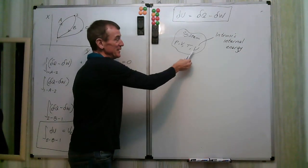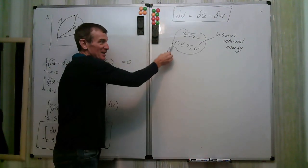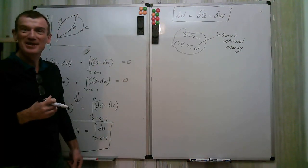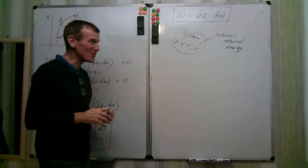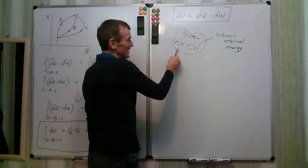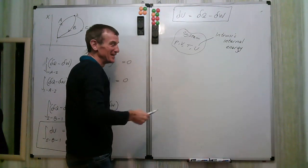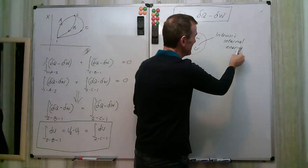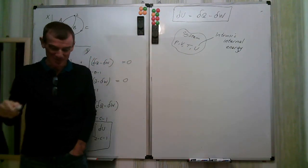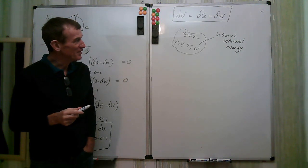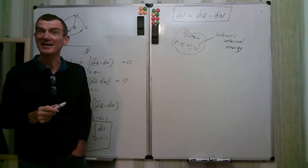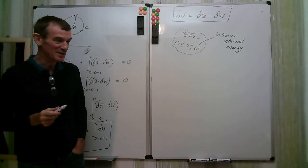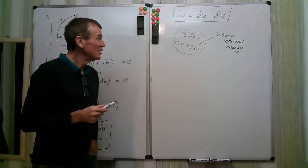We now have another property of the system: alongside P, V, and T, we have what we call intrinsic internal energy U. It's internal because it comes from the microscopic aspects of the system — the molecules. But we've managed to define it macroscopically without referring to that microscopic picture, which is the approach we take in thermodynamics.